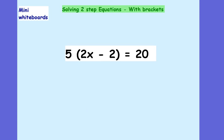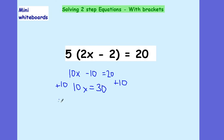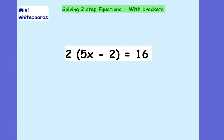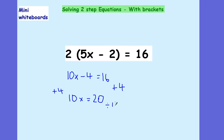How about now? What's changed? This time we've got 10x take away 10 equals 20. If I add 10 to both sides, this tells me that 10x equals 30, so x is equal to 3. And for the next one, we've got 10x take away 4 equals 16. Add 4 to both sides: 10x equals 20. Then if I divide both sides by 10 to get x on its own, I've got that x is equal to 2.